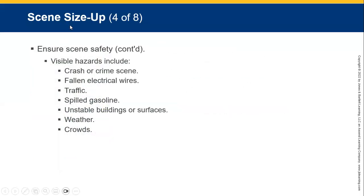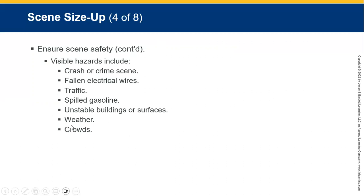What hazards are we looking for at a crash scene or crime scene? Always remember: if it's a crime scene, don't move anything — maintain the integrity of the scene. Electrical wires are definitely a problem with electrocution. Traffic in a high-speed zone is a danger to rescuers. Fuel spills on the roads — diesel, petrol, gasoline. Unstable buildings or surfaces. Bad weather, whether exceptionally hot or cold, blizzards, rain. And obviously crowds — crowds can become very worked up very quickly and could turn into an incident at the drop of a hat.